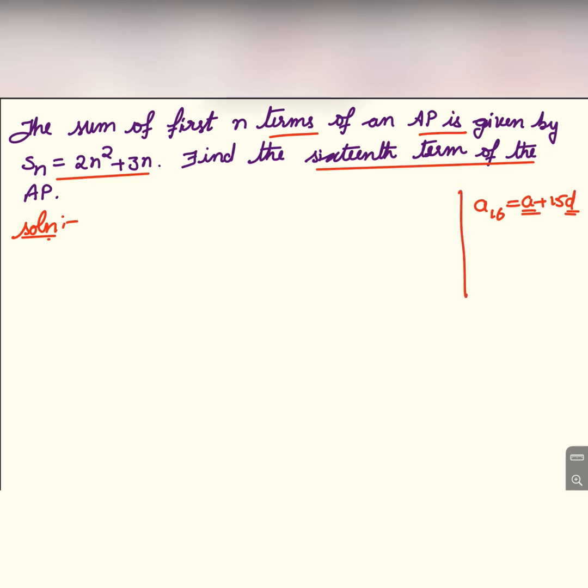For this we need to find out a and d. Let us start with Sn = 2n² + 3n.